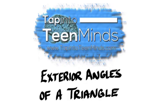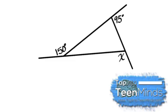In this video we're going to look at an example that involves the exterior angles of a triangle. In this particular question we're given two of the exterior angles and we must find the third.